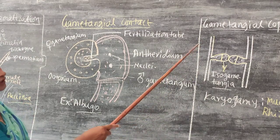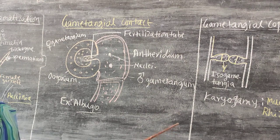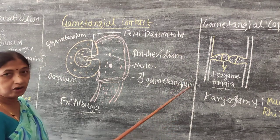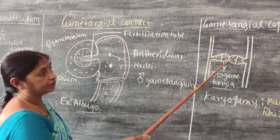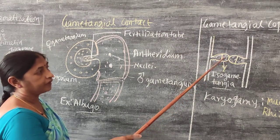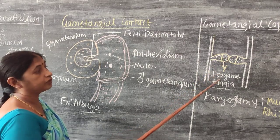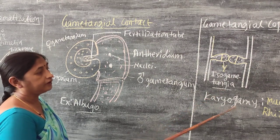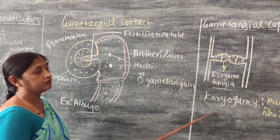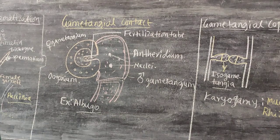In the case of gametangia contact, two compatible gametangia come in contact with each other. At the point of contact, the walls get dissolved, and the resulting structure formed is known as iso-gametangia. The process is called karyogamy, which is commonly observed in the case of Mucor and Rhizopus.